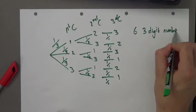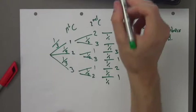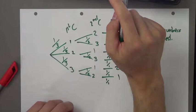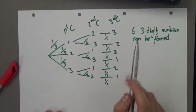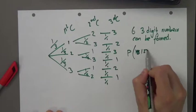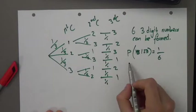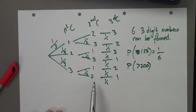What is the probability of the three-digit number being one-two-three? That's the only possible one that can be drawn, so the probability that one-two-three is formed is one out of six. What's the probability that it's greater than 200? Those outcomes are greater than 200, and this one is less. So that's going to be four out of six, which is two out of three.